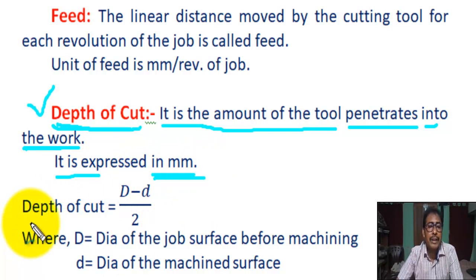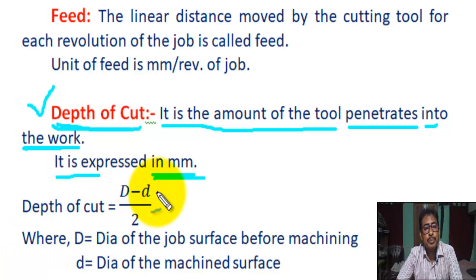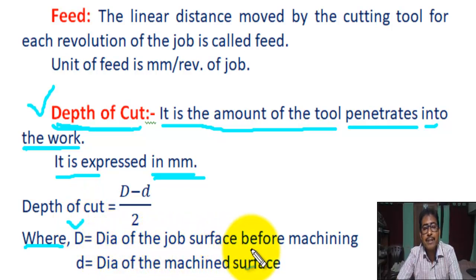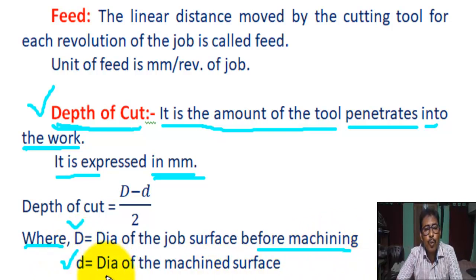Depth of cut in lathe: depth of cut = (D - d) / 2, where D is the diameter of the job surface before machining, and d is the diameter of the machined surface after machining.